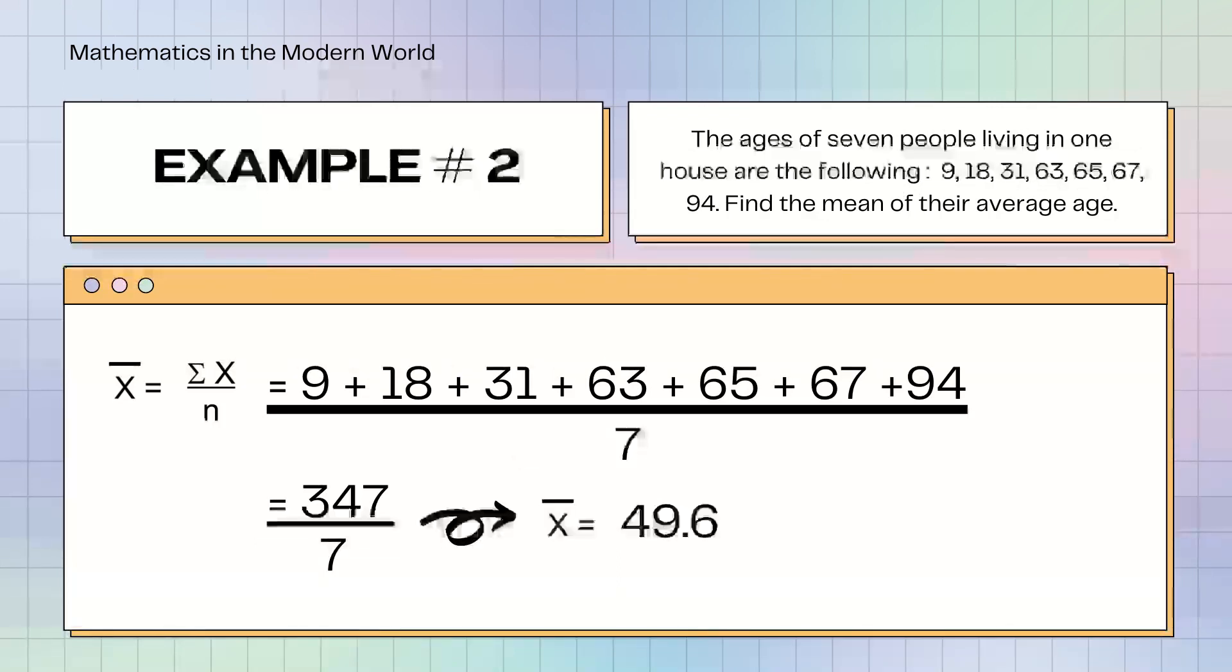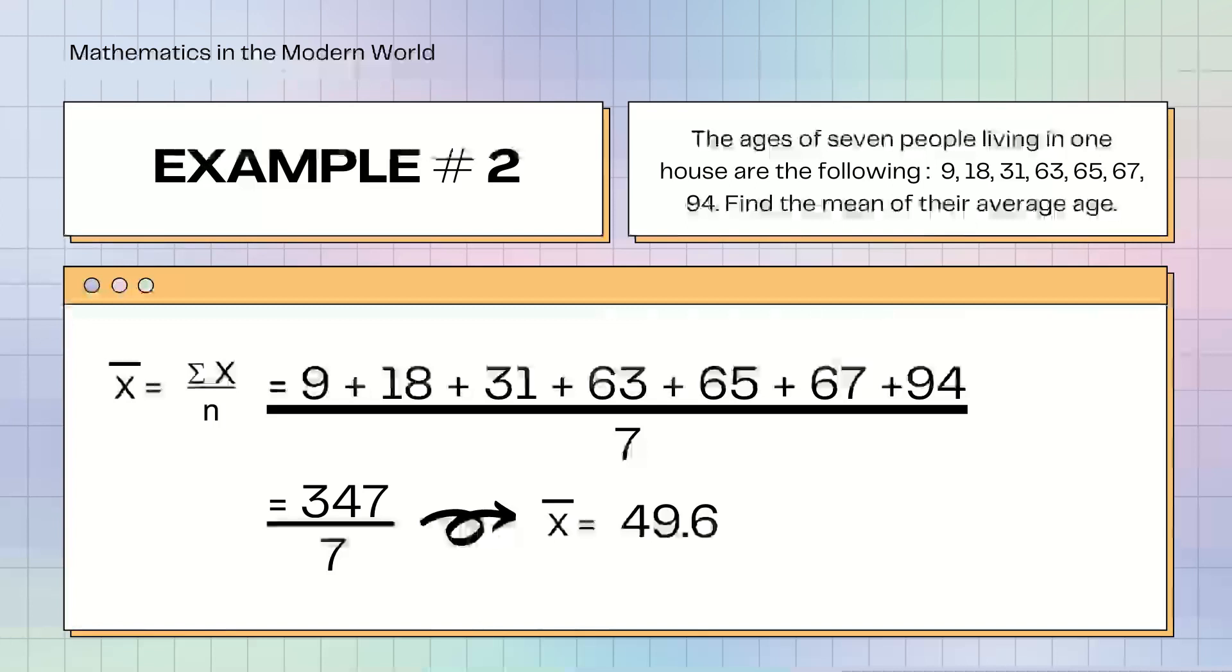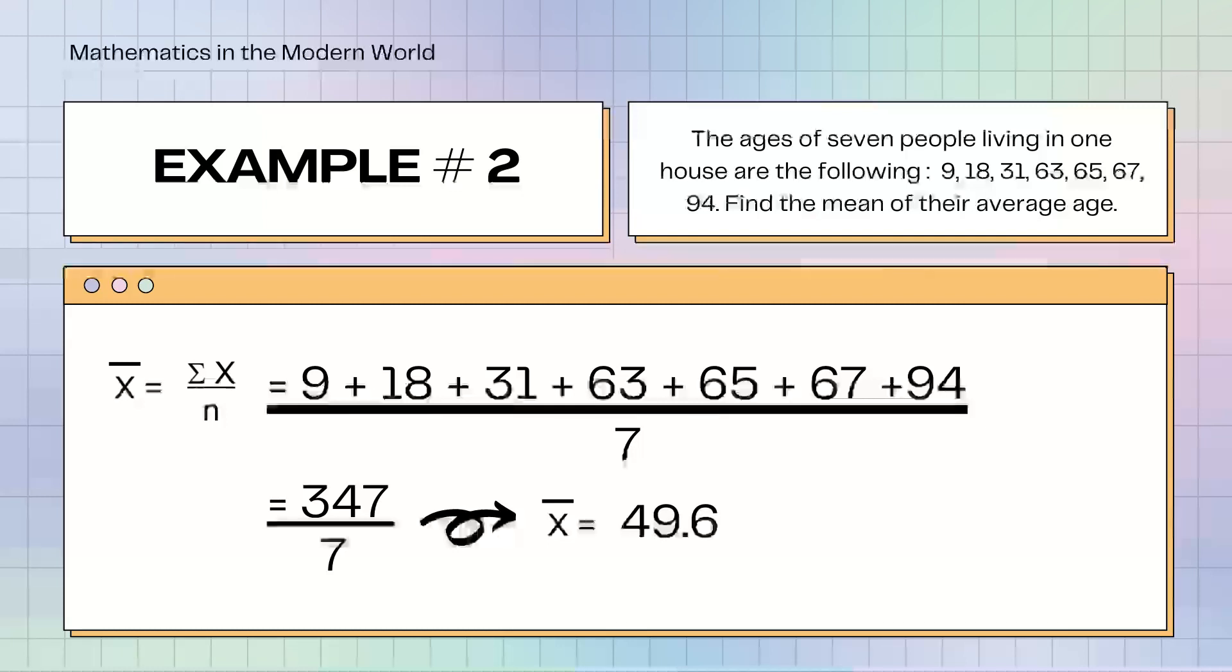Example number 2. The ages of 7 people living in one house are the following: 9, 18, 31, 63, 65, 67, 94. Find the mean of their average age. Katulad ng ginawa natin kanina, i-add natin yung age. 9, plus 18, plus 31, plus 63, plus 65, plus 67, plus 94, equals 347 over 7. With that, it will be 49.6.